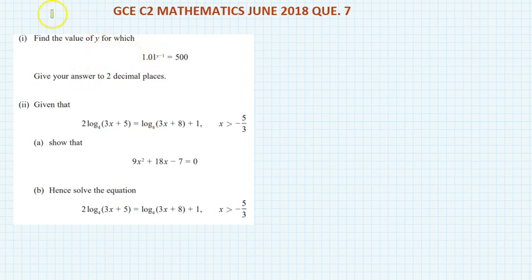Question number 7: Find the value of y for which 1.01 to the power y minus 1 is equal to 500.